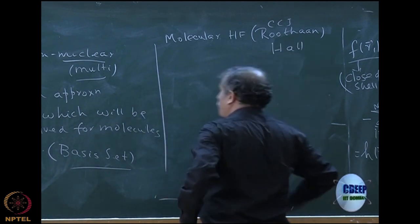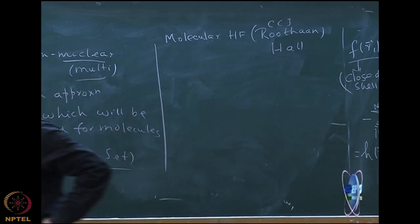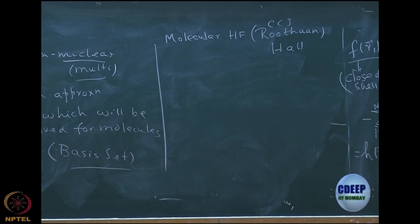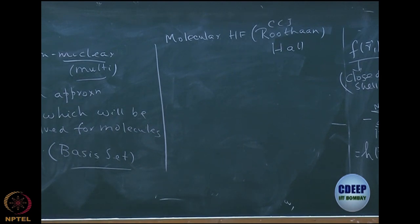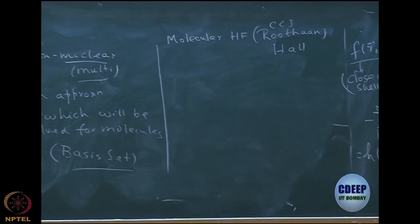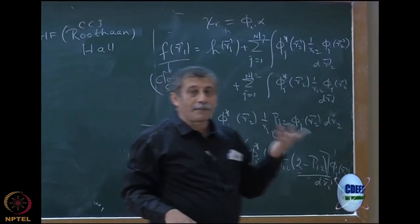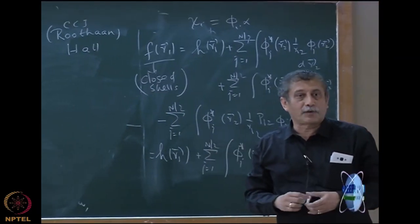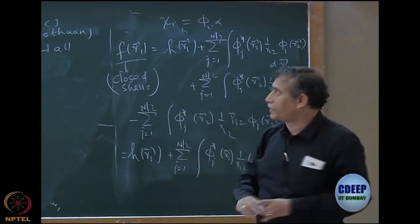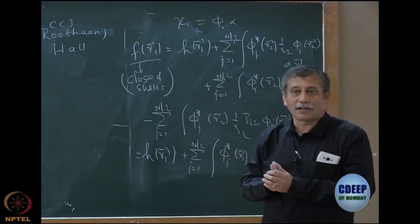These are all very seminal papers in the 1960s. The Roothaan-Hall equation was done first for closed shell and then for open shell systems which are not closed shell, where the equation f of r1 will be somewhat different. They introduced the same basis set for molecules, and that was called the Pople and Nesbet equations. We will not worry about it. Right now let us worry about only Roothaan-Hall equations.